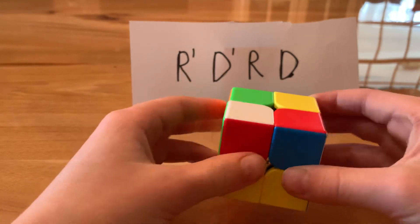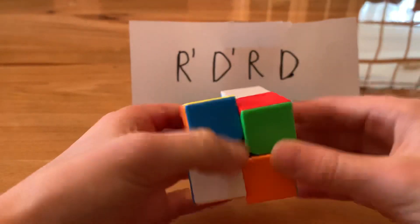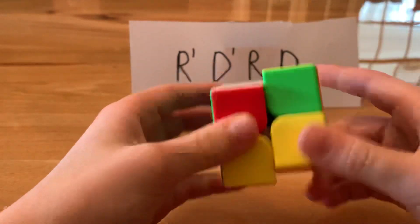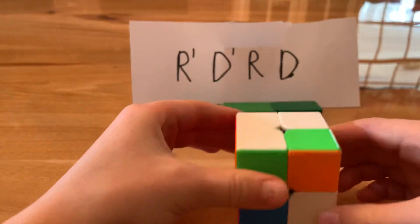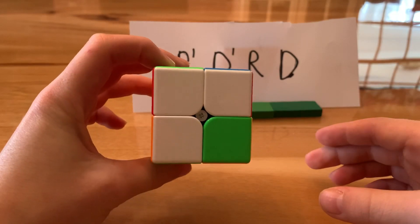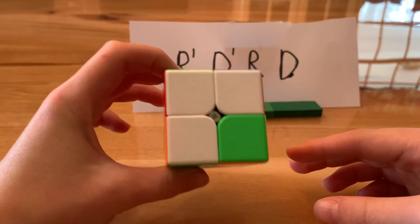So I like to start with white. So basically what you do is just get three white pieces on one side, like this. Pause the video if you need to catch up.